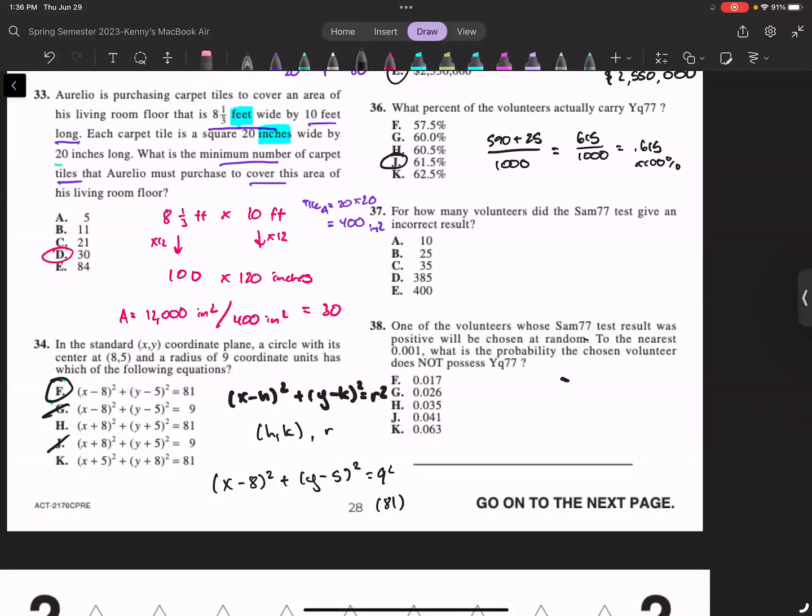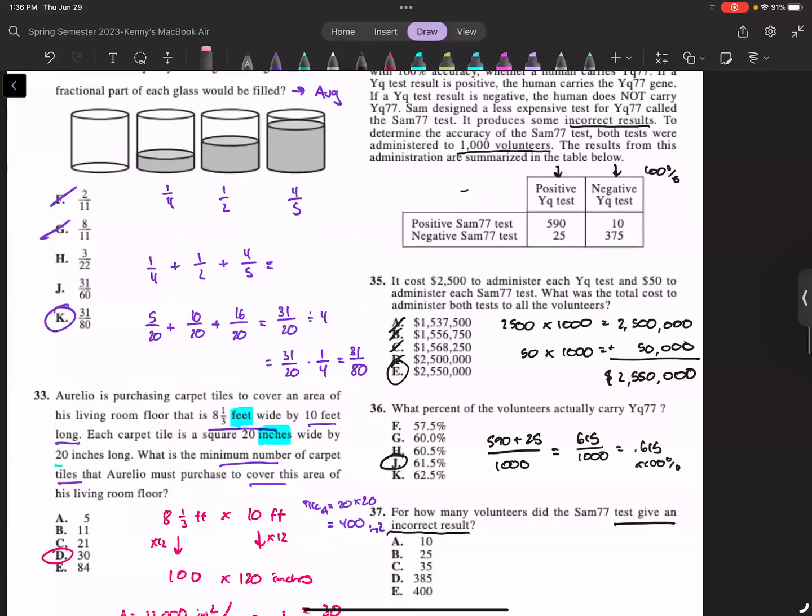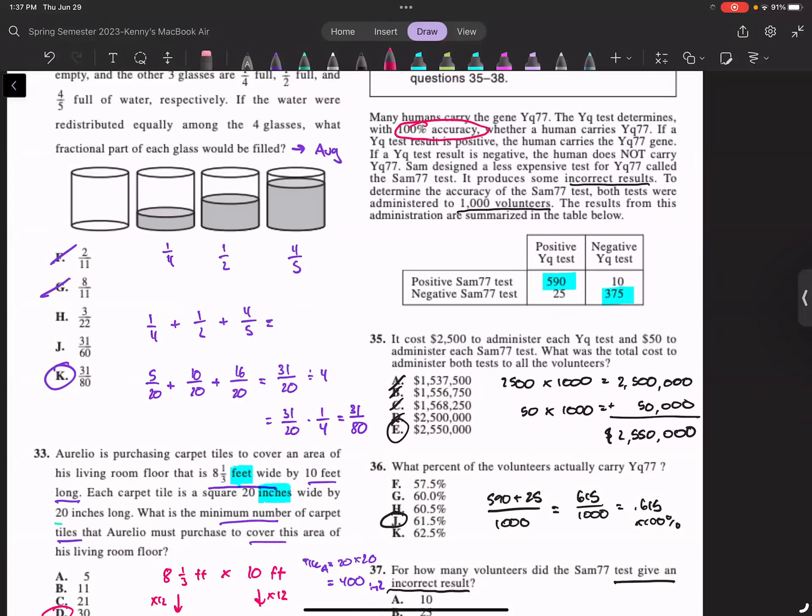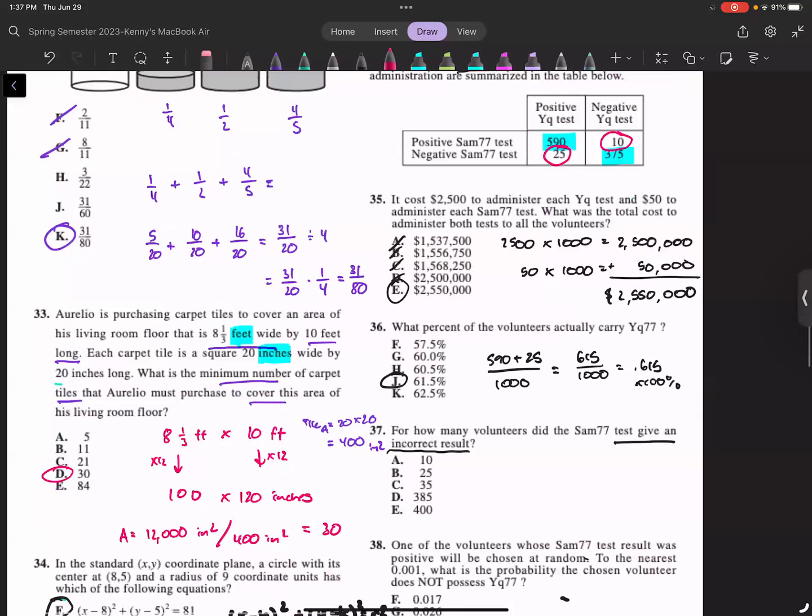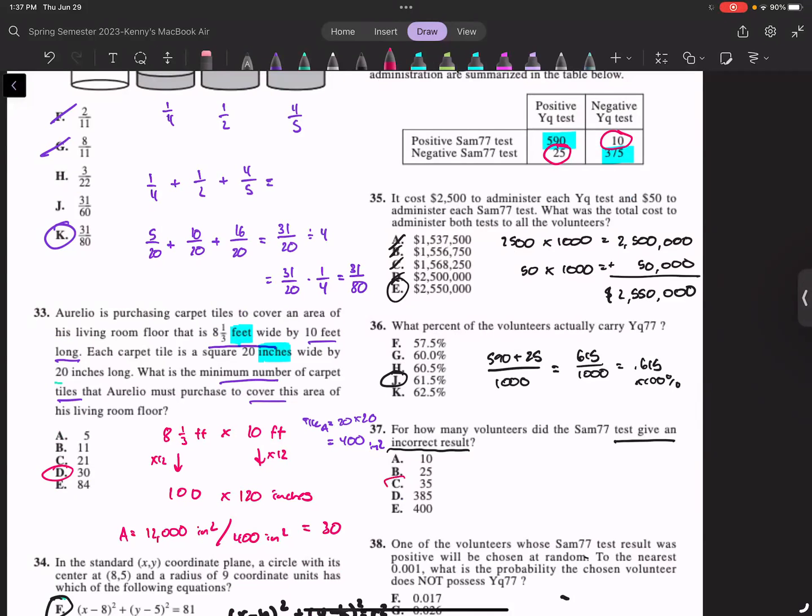For 37: How many volunteers did SAM77 test give an incorrect result? We have to think about which one's incorrect. In this case, the good result is when it's positive-positive because that means it does the right thing, and negative-negative is good. The bad ones - I want to contrast that YQ test because you know the YQ test has 100% accuracy. The SAM77 test produces those incorrect results, and those would be these: the ones where SAM77 tests negative when it should be positive, and when it tests positive when it should be negative. That would be 25 plus 10, so total of 35.